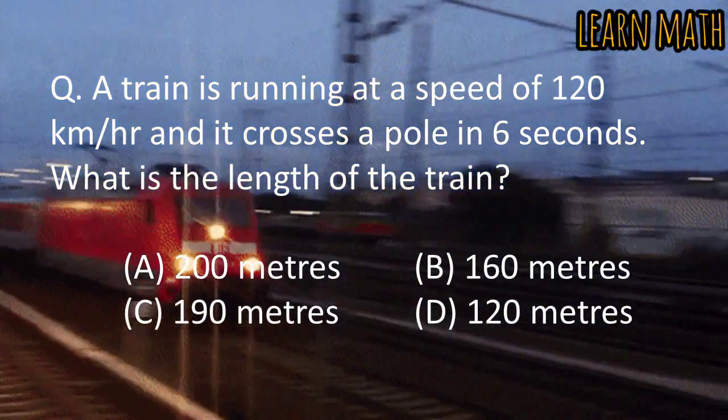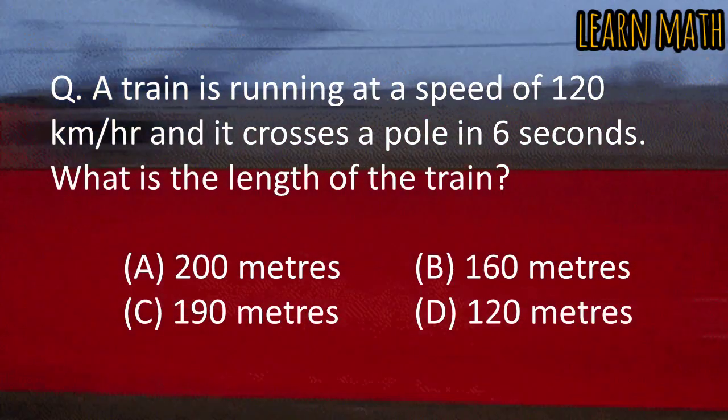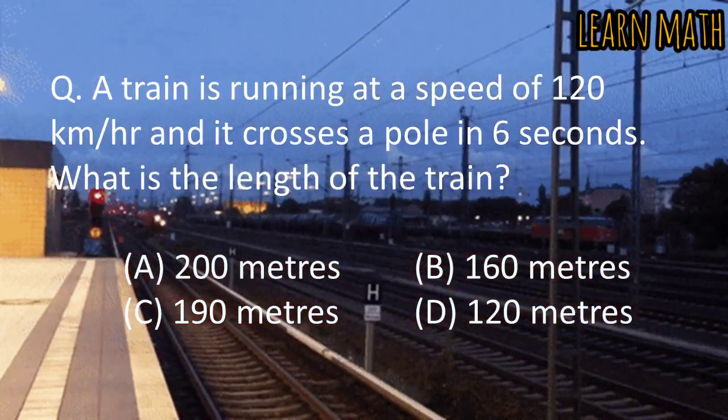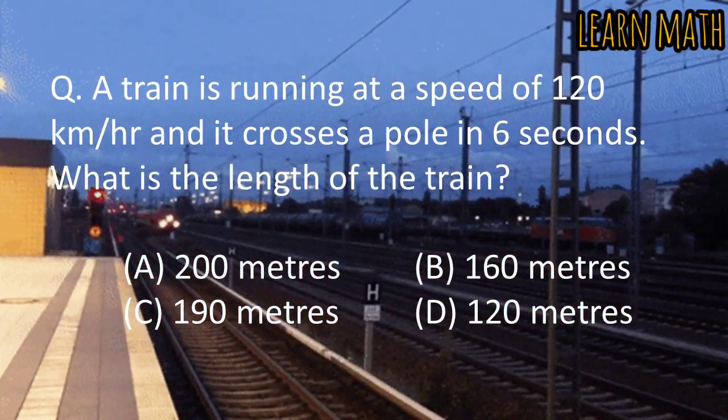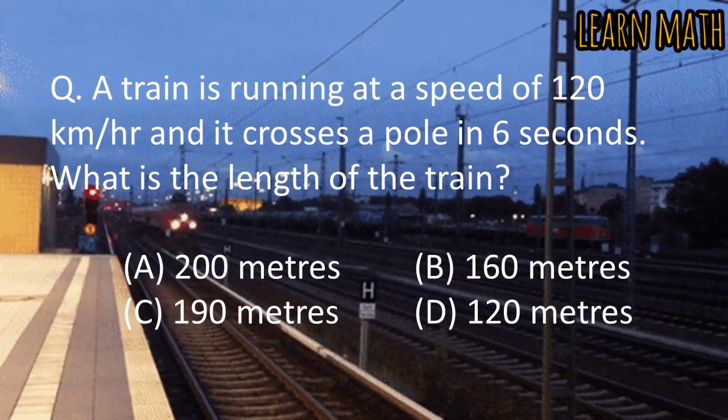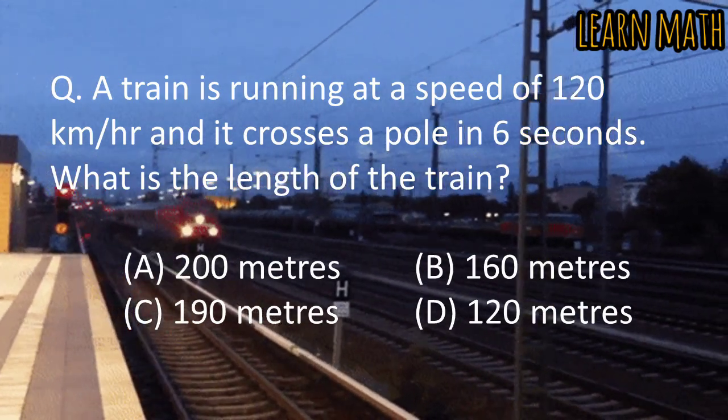In today's video, we are going to solve this question. The question is, a train is running at a speed of 120 km per hour and it crosses a pole in 6 seconds. What is the length of the train?